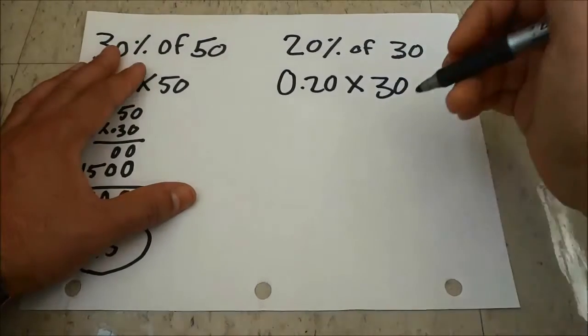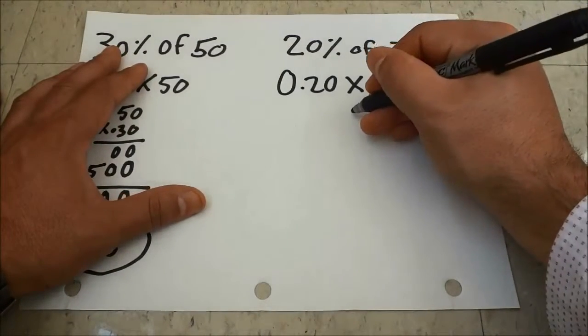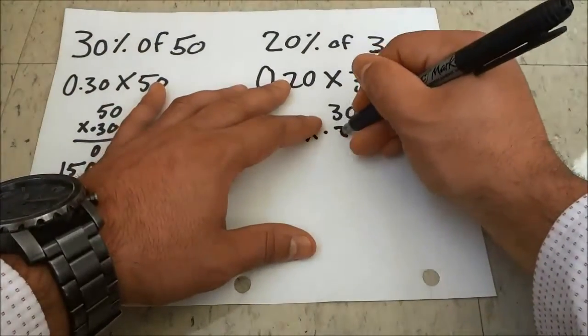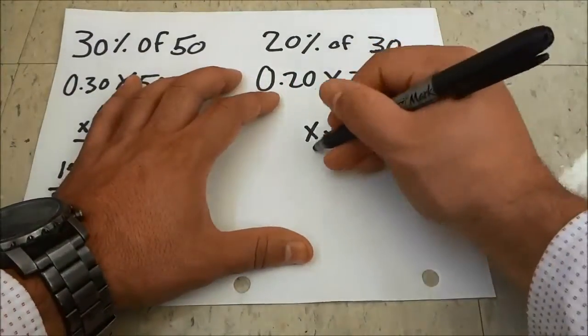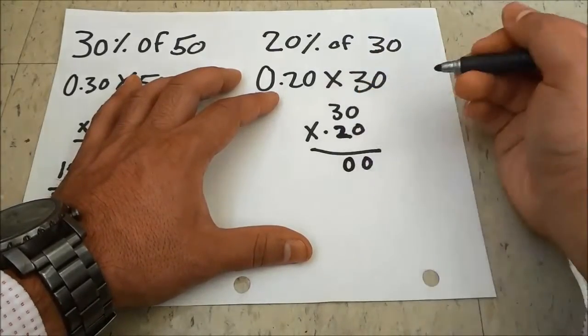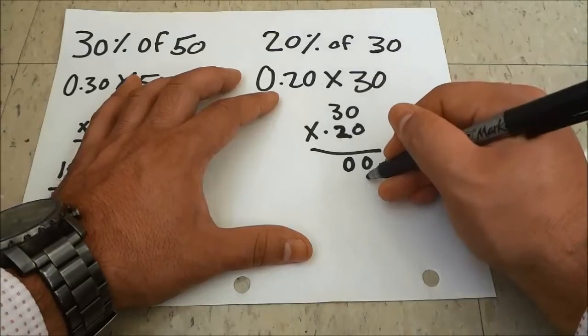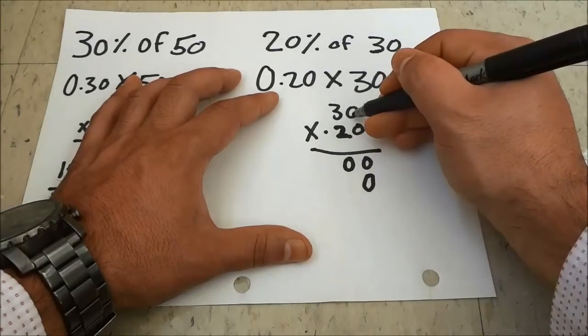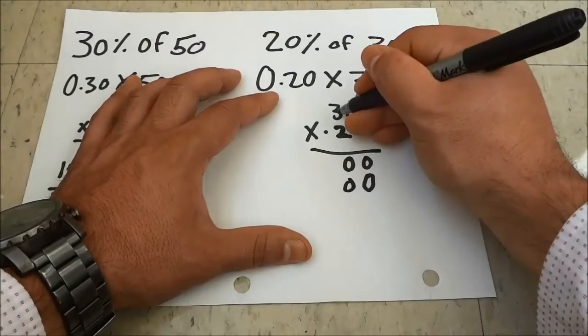Now I'm going to take those two numbers and multiply them together. So 30 times 0.20. 0 times 0 is 0, 0 times 3 is 0. Now I'm going to the next line, so I'm going to put a 0 as a placeholder. 2 times 0 is 0, and 2 times 3 is 6.